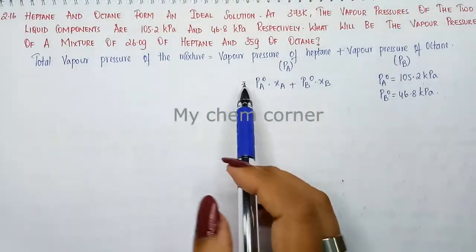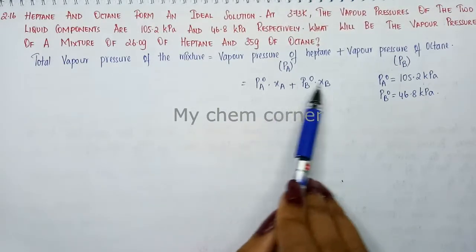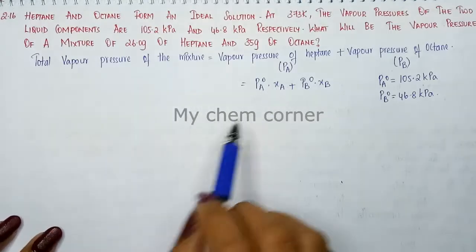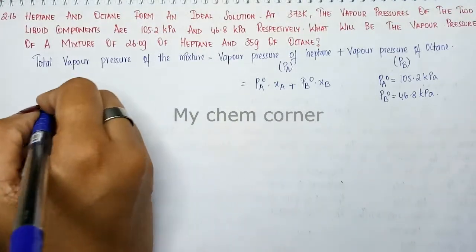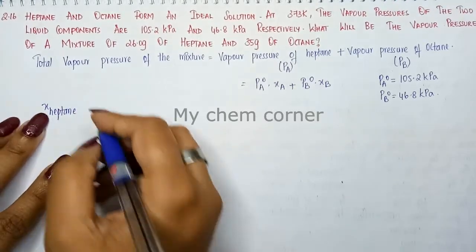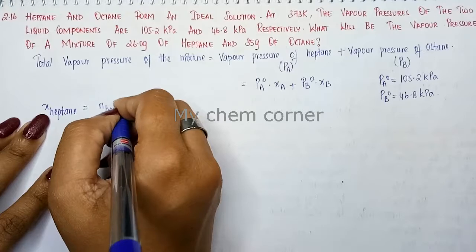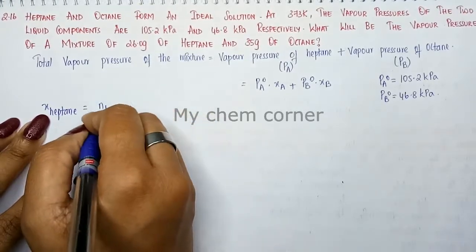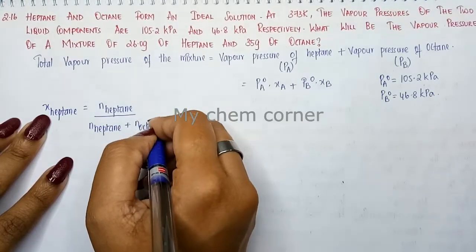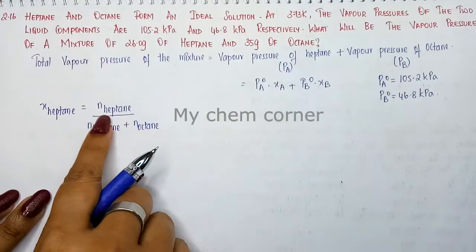Next, we need to find the mole fractions, which are not given in the question. The mole fraction formula: mole fraction of heptane, denoted as small x, equals the number of moles of heptane divided by the number of moles of heptane plus the number of moles of octane. The number of moles is also not given, so we split the formula for number of moles.